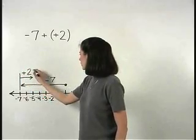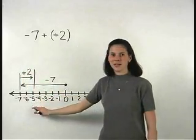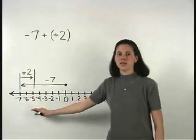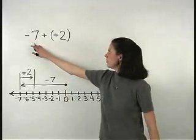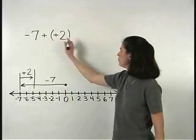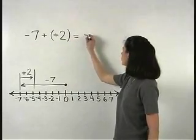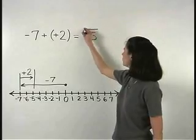And we end up at negative 5. So negative 7 minus negative 2 or negative 7 plus positive 2 equals negative 5.